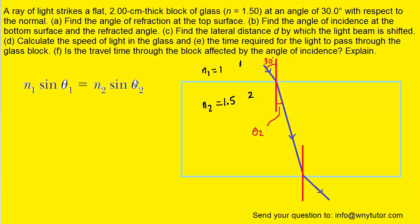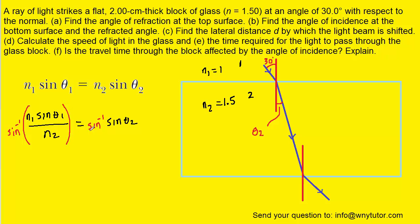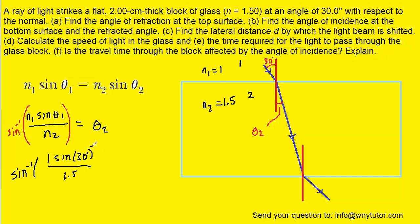What we're looking for is theta 2. To solve for theta 2 we first divide both sides by N2, and then to get rid of the sine in front of theta 2 we take the inverse sine, symbolized by sine with a little negative 1, on both sides of the equation. On the right side the inverse sine and the sine cancel, leaving just theta 2. Plugging in the known values — N1 is 1, theta 1 is 30 degrees, and N2 is 1.5 — making sure your calculator is in degree mode, you should get roughly 19.5 degrees for theta 2.